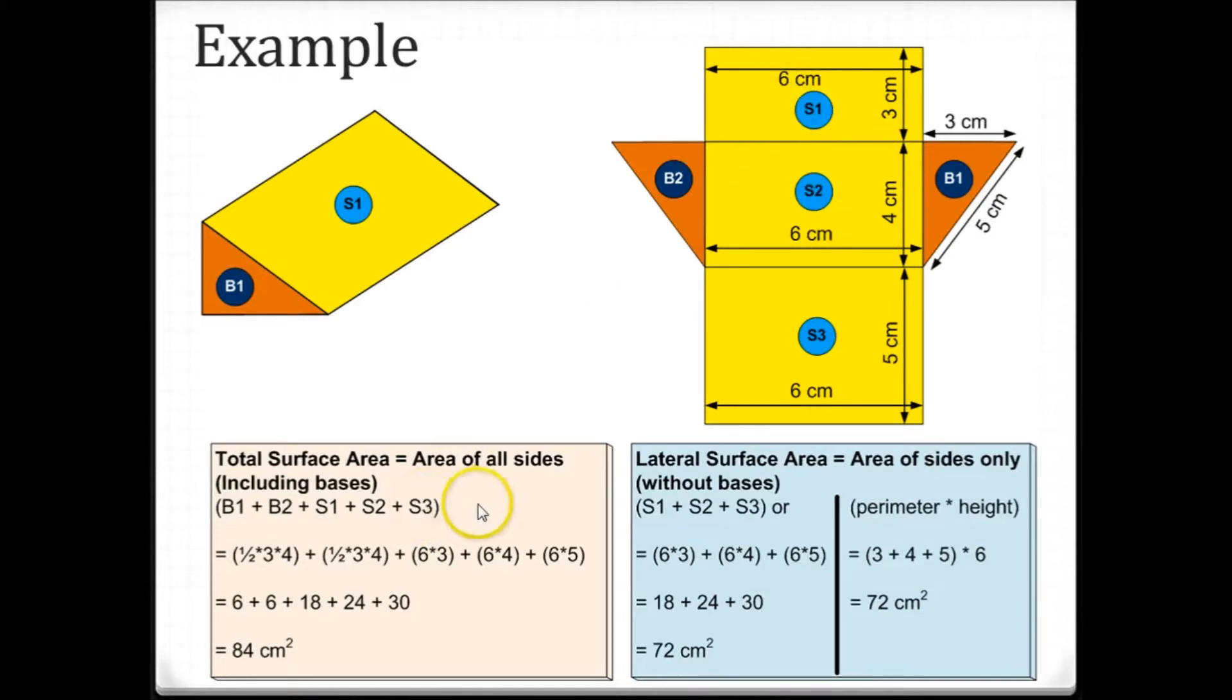So the area of a triangle is equal to one-half times base times height. The base is 4 centimeters, height is 3 centimeters, so that comes out to be 6. b2 is the same, so 6 centimeters squared for that one.